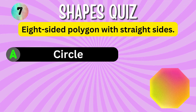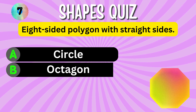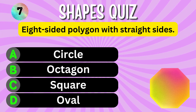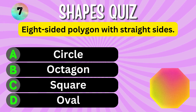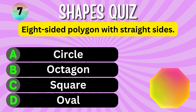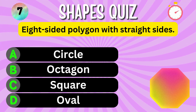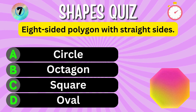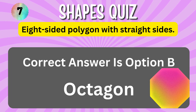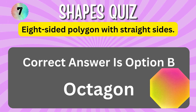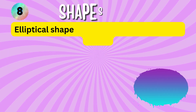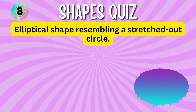An eight-sided polygon with straight sides. Option A. Option B. Option C. Option D. You have 5 seconds to choose the correct answer. Your time starts now. The correct answer is Option B, Octagon.